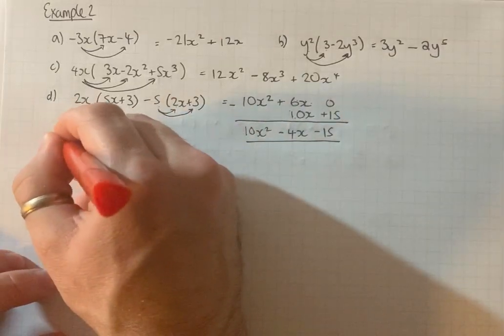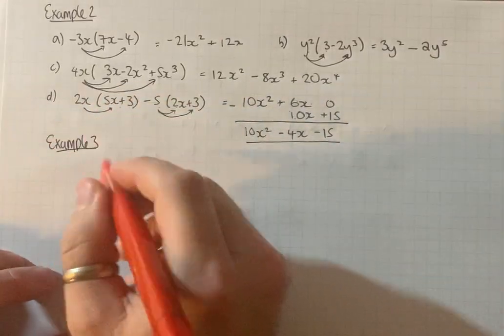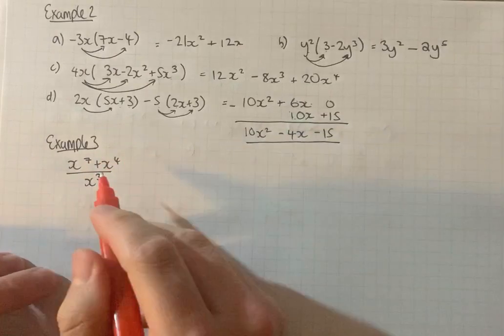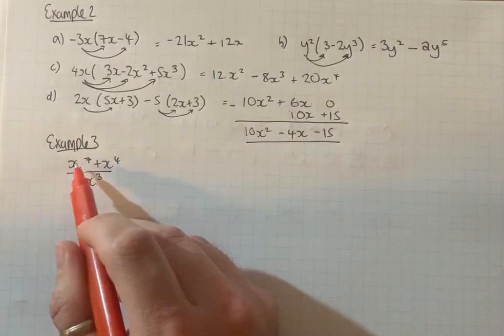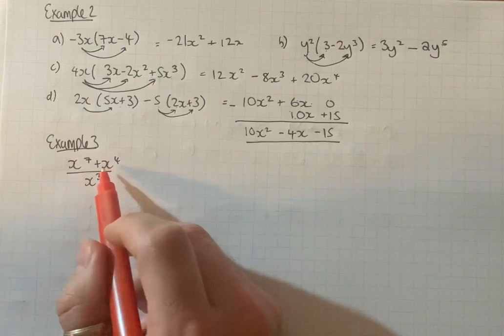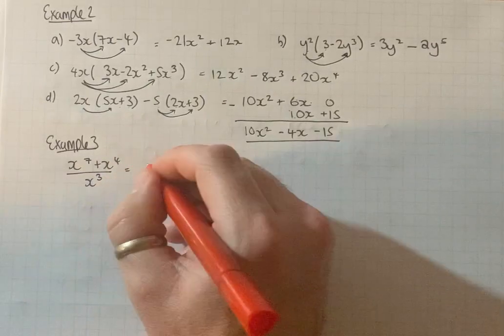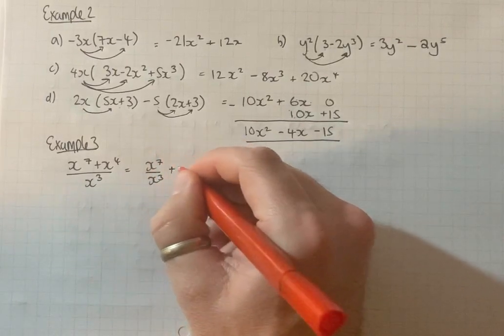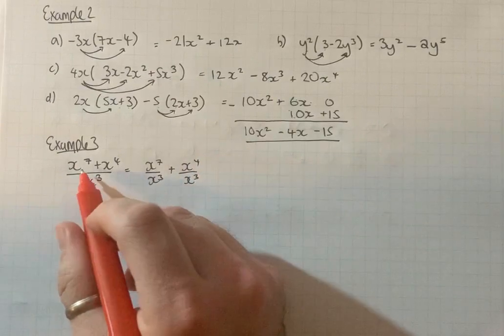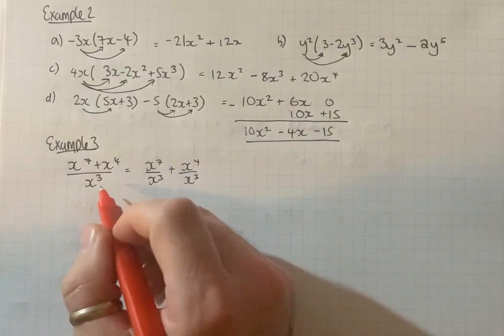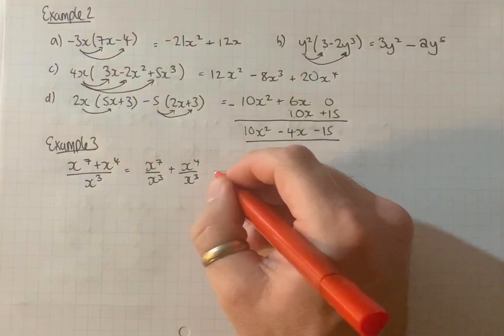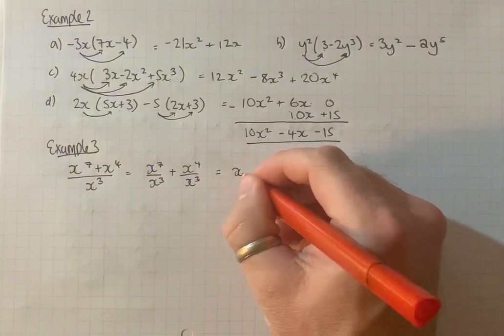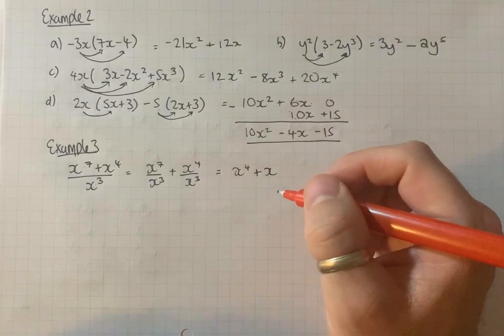Example 3. x to the 7 plus x to the 4 over x cubed. Now when you've got a multi-part numerator, so you've got different terms separated by add and subtract, and a single denominator, we can simplify it by dividing each part of the numerator by the denominator. So you can say it's this divide this plus this divide by this. And then use the division rule. 7 take 3 is 4, 4 take 3 is 1. It gives us x to the 4 plus x.